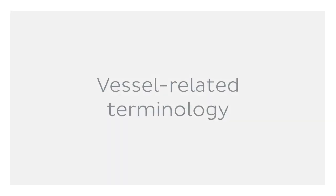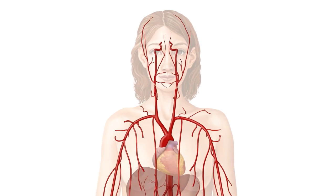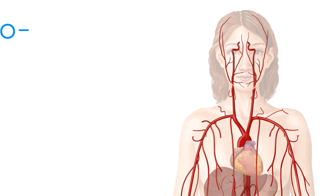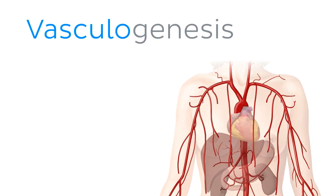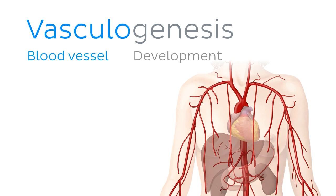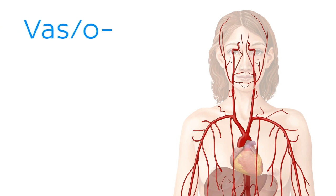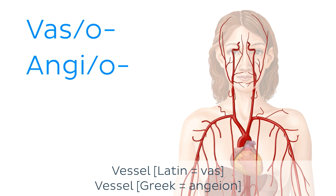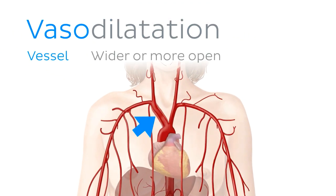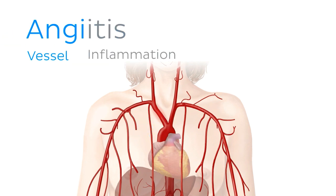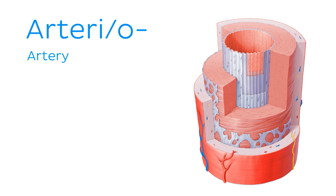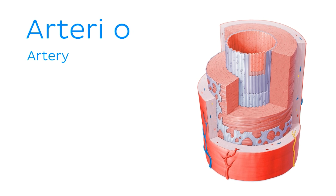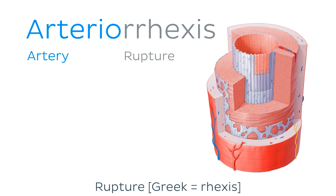Let's move on from the heart to look at the other star of the cardiovascular system: our blood vessels. Many general terms related to the vascular system often begin with the root vasculo. For example, vasculogenesis is a process for the development of blood vessels. We also use the roots vas or vaso, and angio or angi when talking about blood vessels, such as vasodilation or angiitis. Artery or arterio is the root associated with arteries, such as arteriorexis, which is the rupture of an artery.